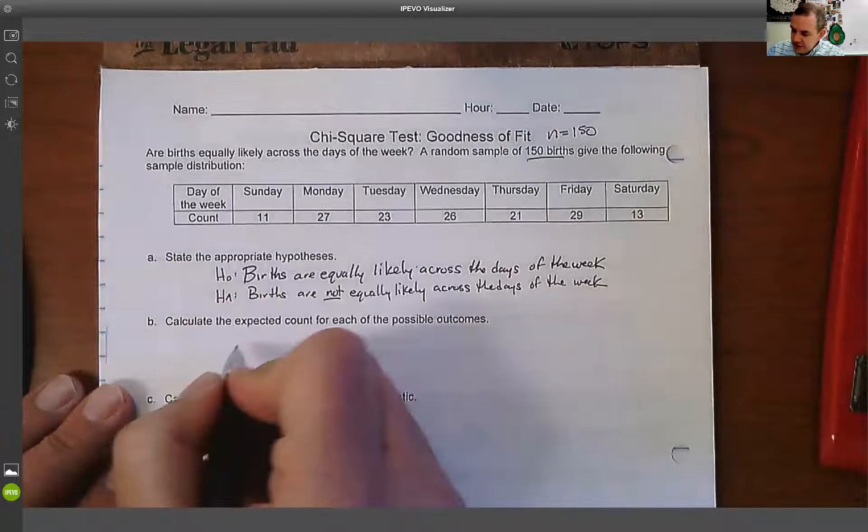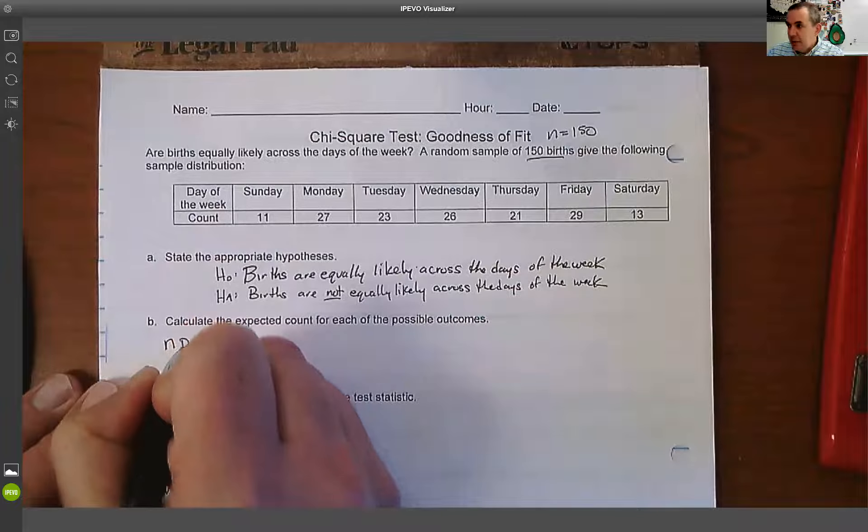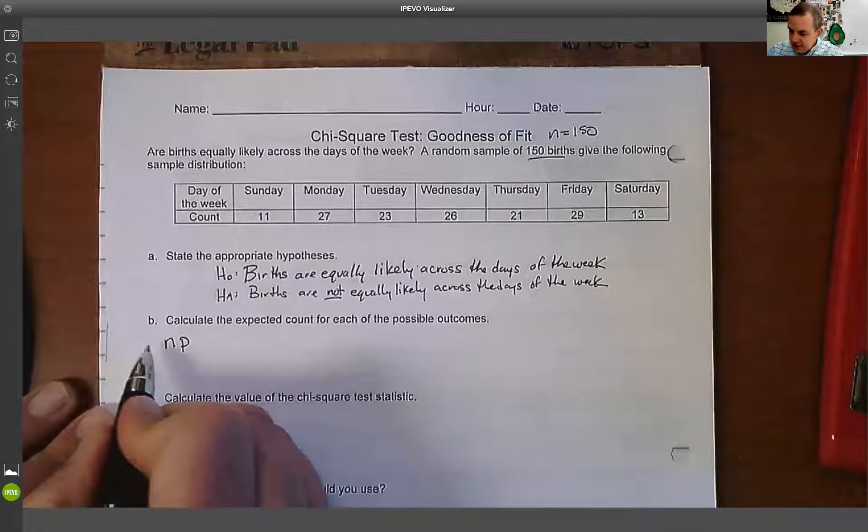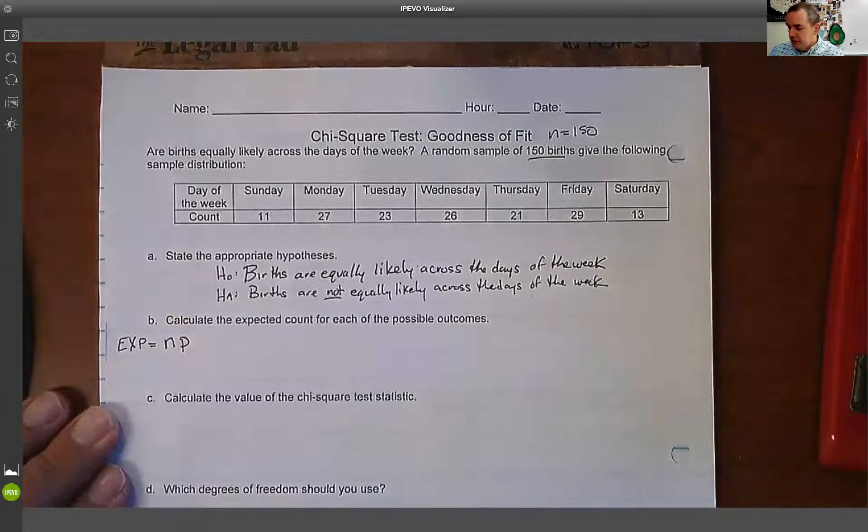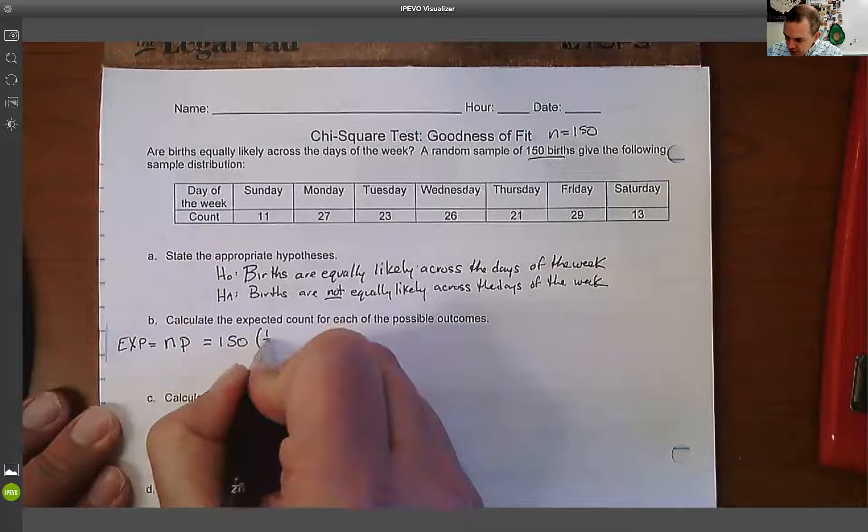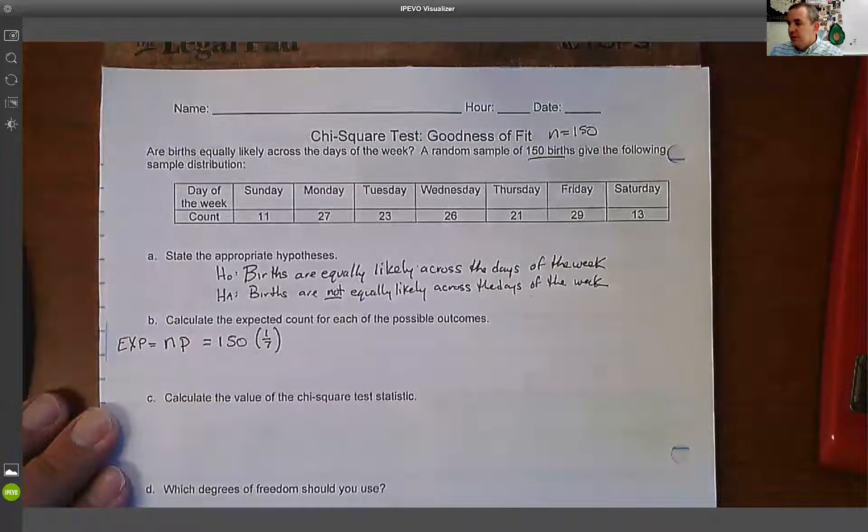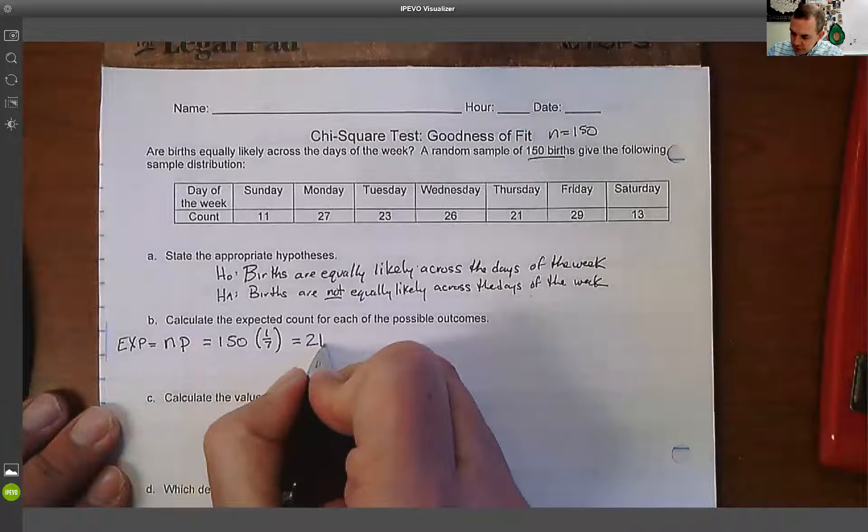So now the expected counts. Since we have a sample size N of 150, we need a probability. This is how we're going to figure out what our expected. And in this case, the way we do that is 150. And if everything is to be believed, our probability, it should be one seventh of them on each day.